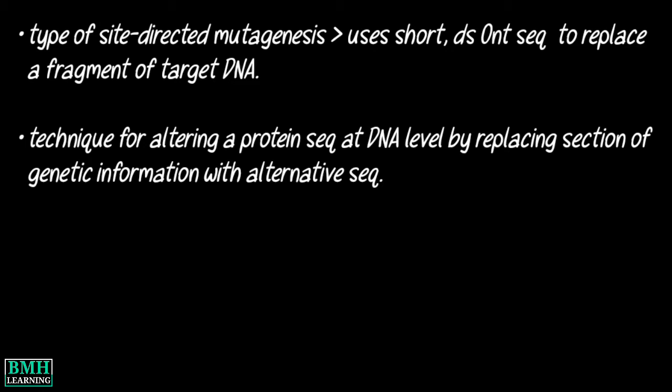Basically, Cassette mutagenesis is a technique for altering a protein sequence at the DNA level by replacing a section of genetic information with an alternative sequence normally provided by a synthetic DNA duplex.